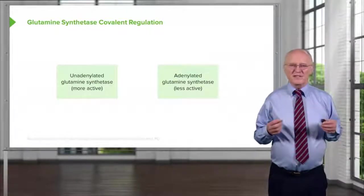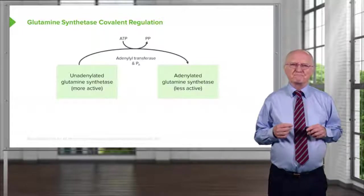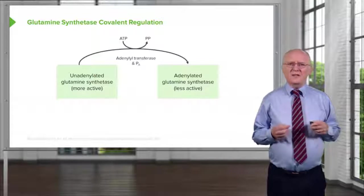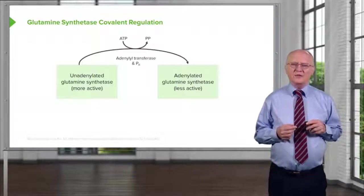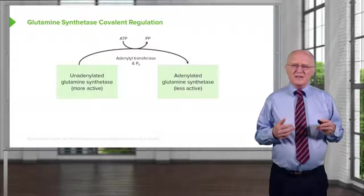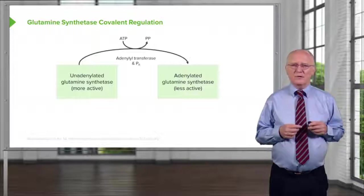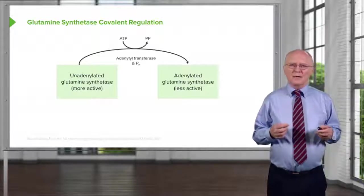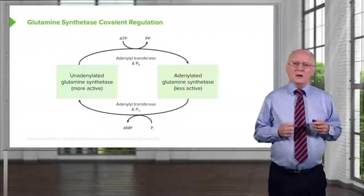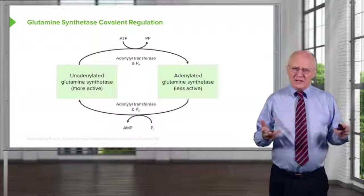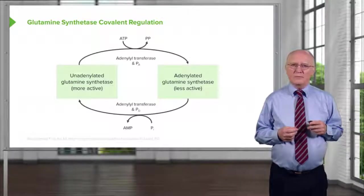In addition to allosteric regulation, glutamine synthetase can also be regulated by covalent modification, as shown here. In its unadenylated form — before modification — the enzyme is more active. Addition of an adenyl group from ATP, catalyzed by adenyl transferase and facilitated by a protein called P sub A, produces the adenylated form, which is less active. Adenyl transferase can also remove the adenyl group using a different protein, P sub D, through phosphorolysis — using a phosphate to remove the adenyl group from adenylated glutamine synthetase.